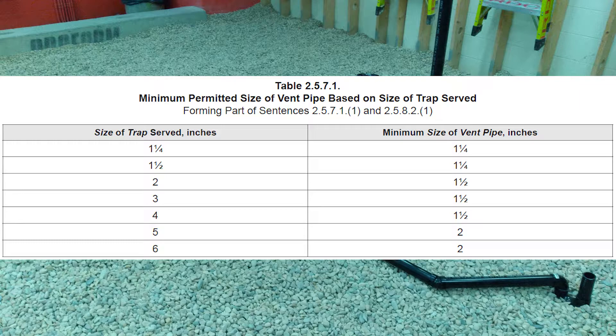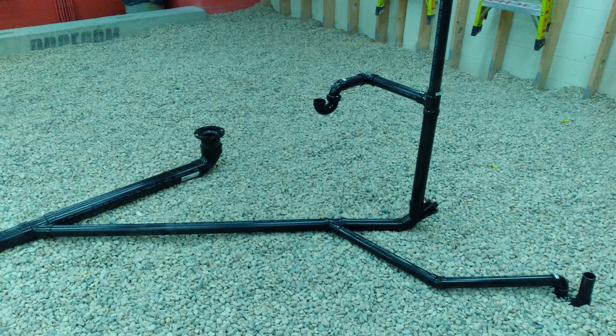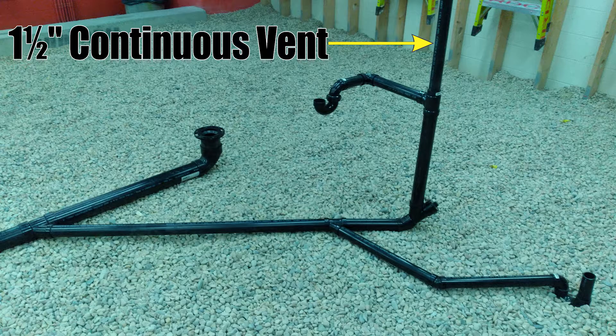Except I need to check a very special table called 2571. Table 2571 tells us the minimum size of vent pipe based on the size of traps served. I look in my bathroom group for the largest trap, which is the three inch water closet, and compare it to this table. Going down to three inches and across to the right, the minimum size vent pipe permitted is one and a half inches. Therefore, for this system, I require a one and a half inch continuous vent.